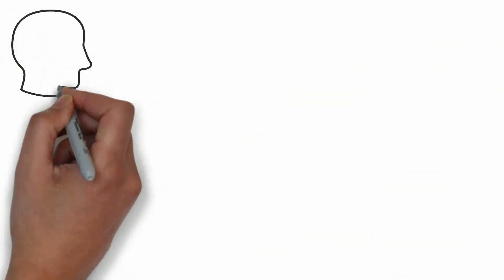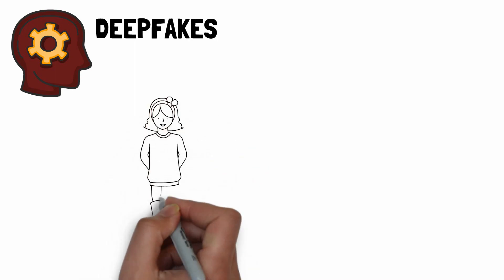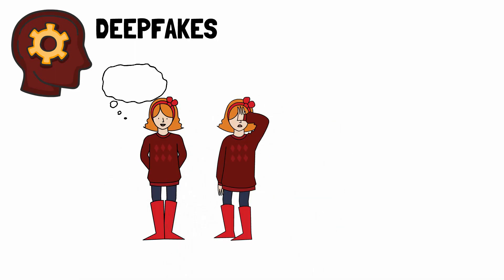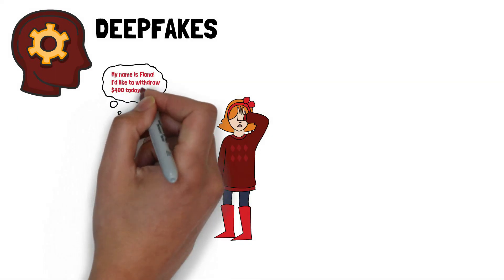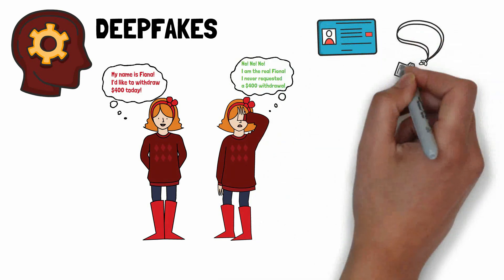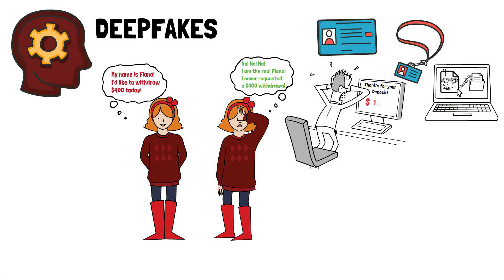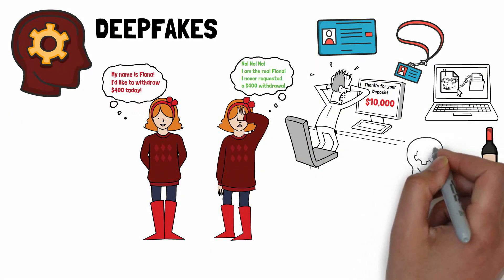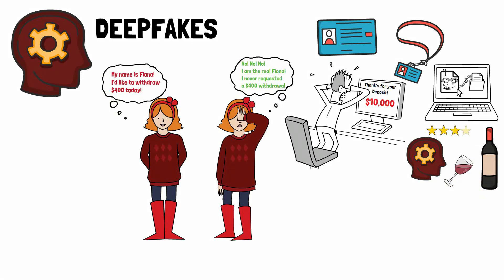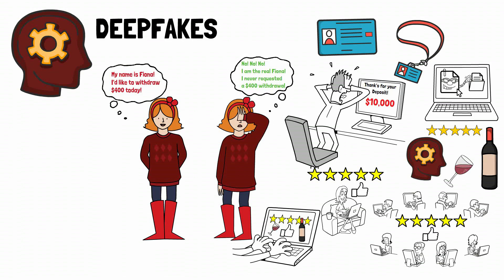Fraud: AI can be used to create deepfakes, which are realistic but manipulated images, videos or audio that can be used to spread false information or to deceive people. Deepfakes can be used to commit fraud such as creating fake identities or financial scams. Additionally, AI can be used to automate fraudulent activities such as generating fake reviews or manipulating online advertisements.